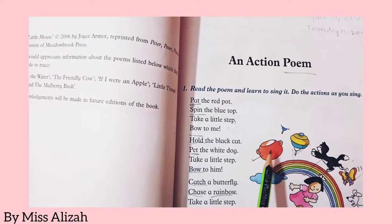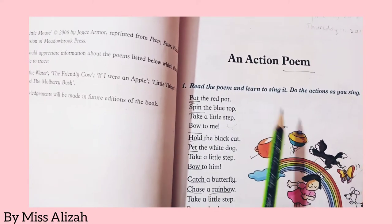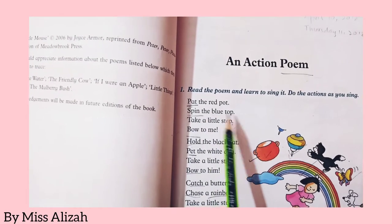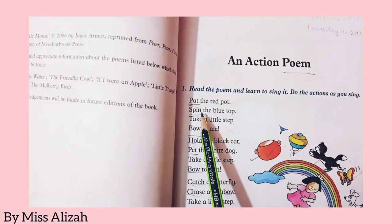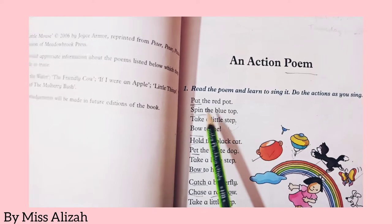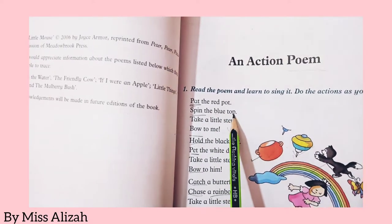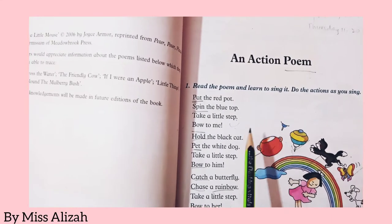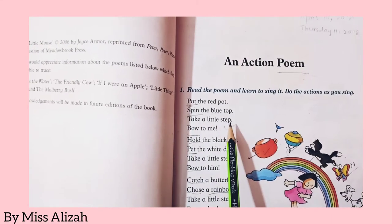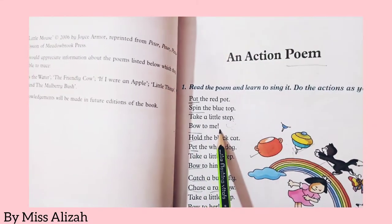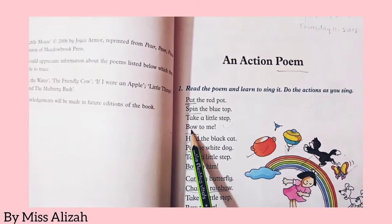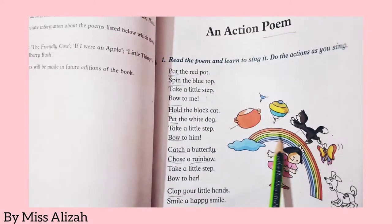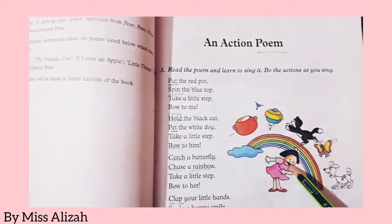Where is the red pot? Here is the red pot. All right, next: 'Spin the blue top.' Spin ka matlab hota hai ghuwana — to spin. Spin the blue top; top is a spinning toy. 'Take a little step, bow to me.' What does 'bow' mean? Bow ka matlab jhukna — to bow. Like, what is she doing? She is bowing.